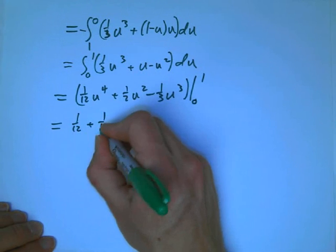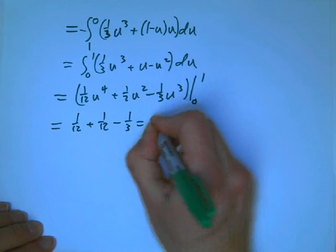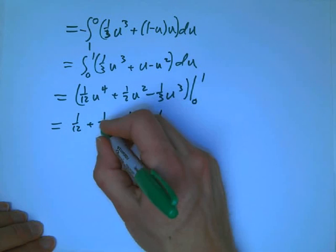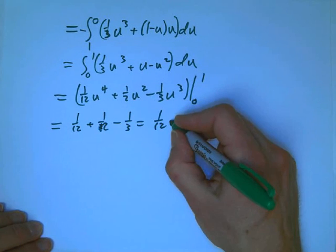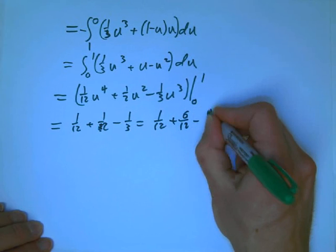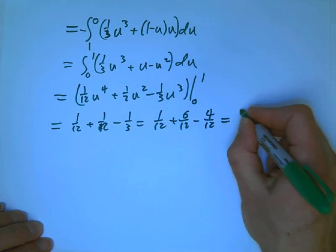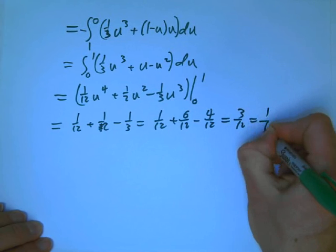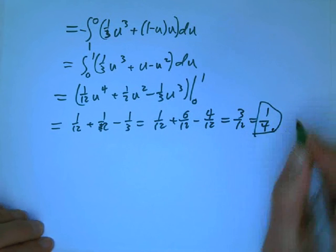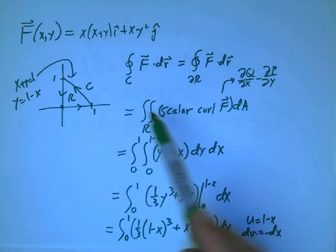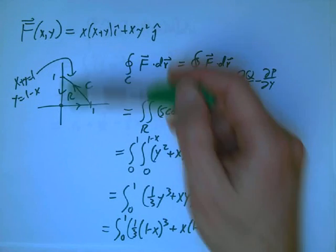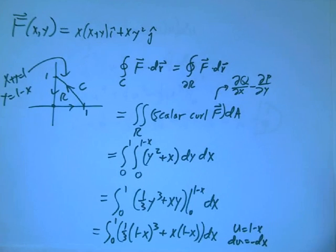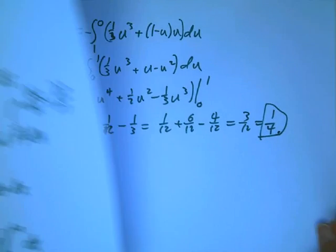The 0 doesn't contribute once again. And I just get 1/12 plus 1/2 minus 1/3. 1/12 plus 6/12 minus 4/12, 3/12, which is 1/4. So the details of the answer are not the really important thing. The important thing is taking this line integral and turning it into an area integral using Green's theorem.